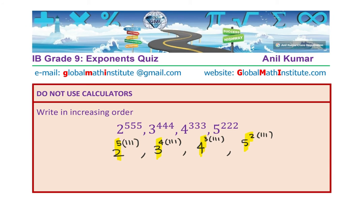So what do I get? 2 to the power of 5 is 32 to the power of 111. 3 to the power of 4 is 81. 4 to the power of 3 is 64. 5 squared is 25.